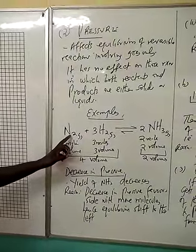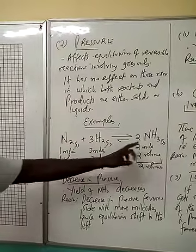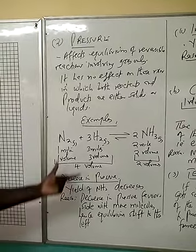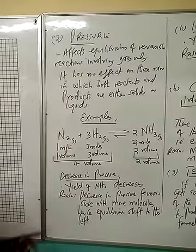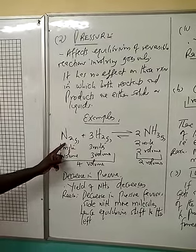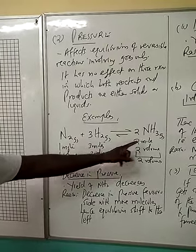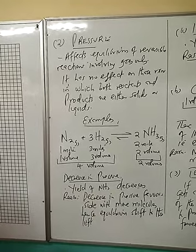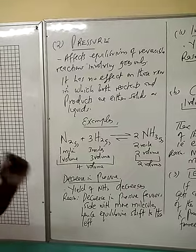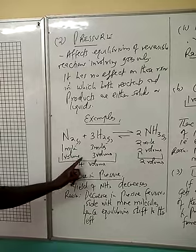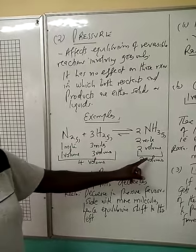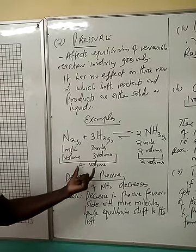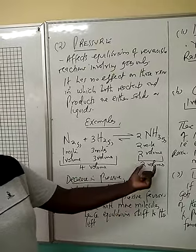A reaction between nitrogen and hydrogen giving us ammonia gas. If you write the chemical equation for this reaction, you find that one mole of nitrogen reacts with three moles of hydrogen giving us two moles of ammonia. So if you look at the reactants, we have got four volumes. If you look at the products, two volumes.